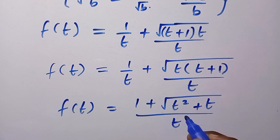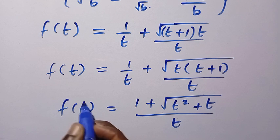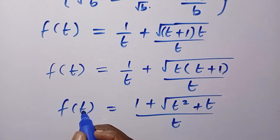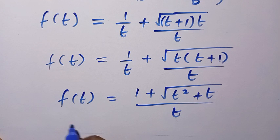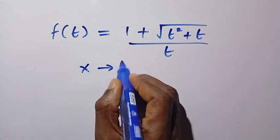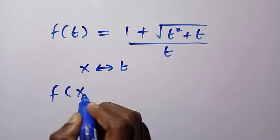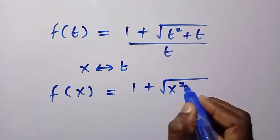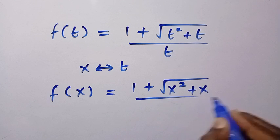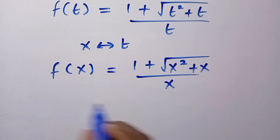Now we replace t with x, since both t and x are members of the real numbers and serve the same role. Therefore, the solution is: f(x) = 1/x + √(x²+x)/x, which we can write as f(x) = (1 + √(x²+x)) / x.